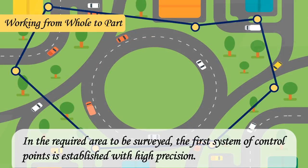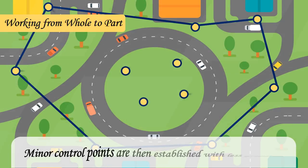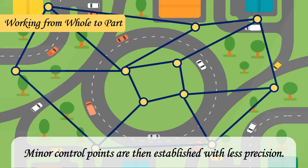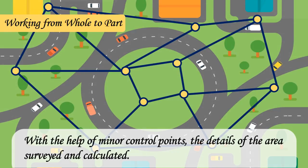In the required area to be surveyed, the first system of control points is established with high precision. Minor control points are then established with less precision. With the help of minor control points, the details of the area are surveyed and calculated.